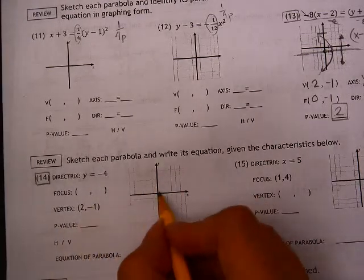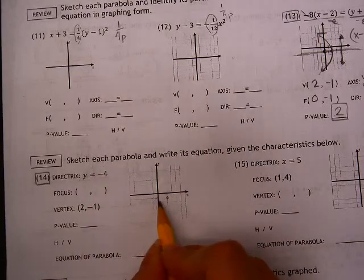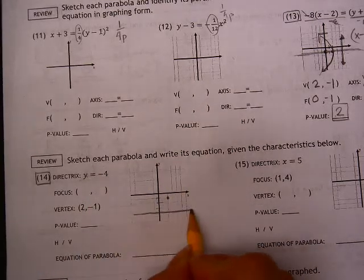We are just going to graph all this stuff. So 2 comma negative 1 puts us right there. Directrix y equals negative 4. 1, 2, 3, 4 is my y value.